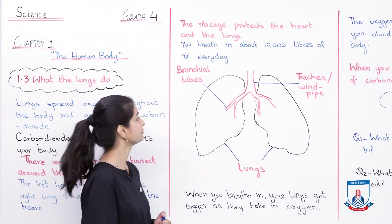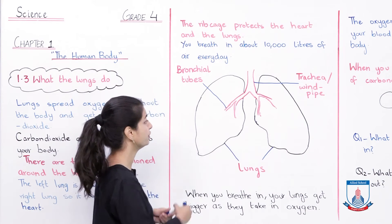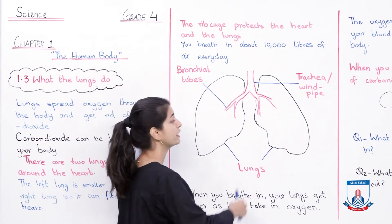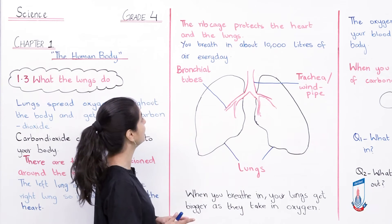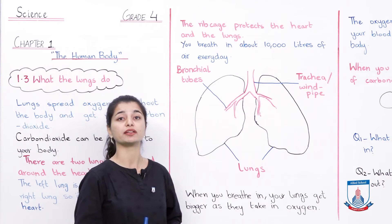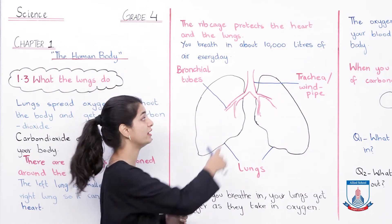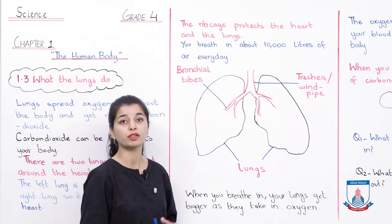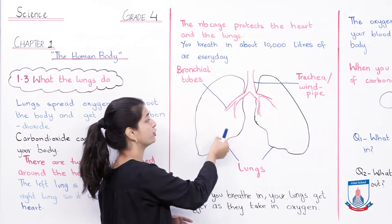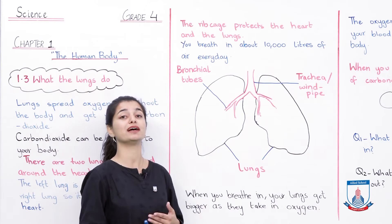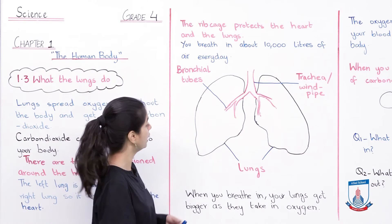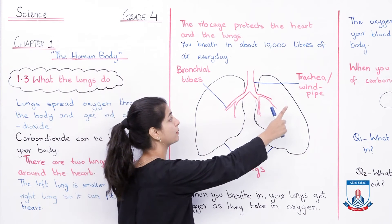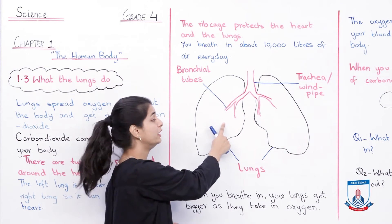We have drawn a diagram of the lungs and labeled it. You can see that the right lung is a little bigger than the left one. The left one is smaller because the heart is positioned a little more to the left. You can see the windpipe, or trachea — all the air goes through the trachea to your lungs. The trachea then divides into smaller branches called bronchial tubes. The bronchial tubes get smaller and smaller, spreading into every portion of your lungs, so the lungs can extract oxygen and remove carbon dioxide.